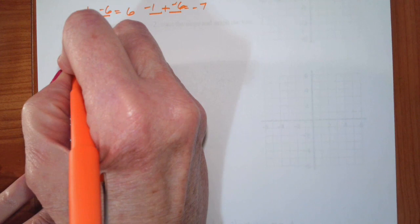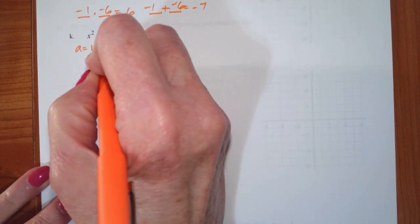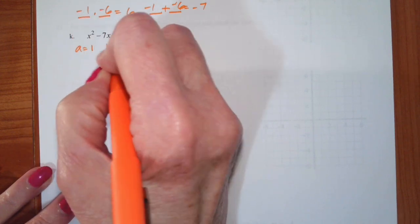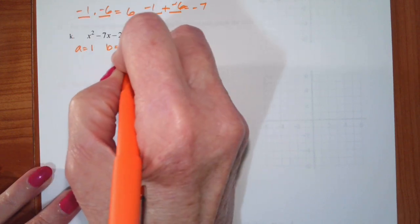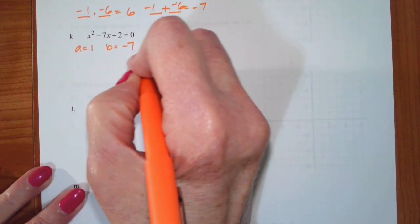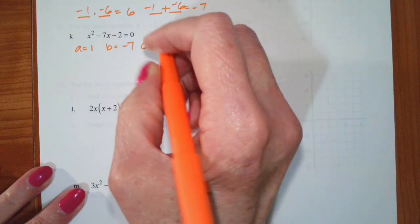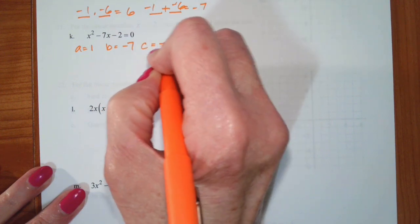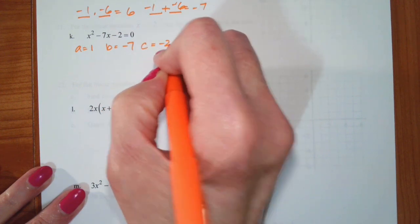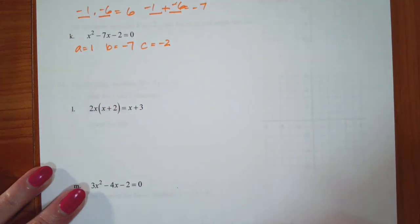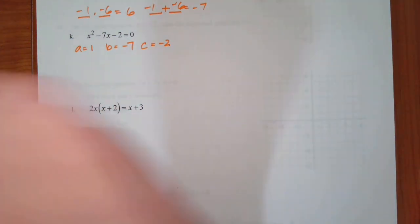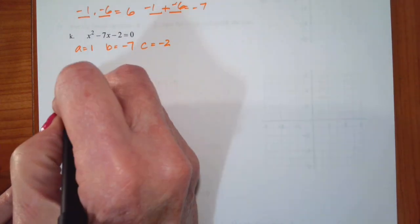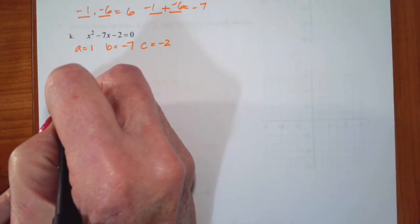So a is the coefficient of x squared, b is the coefficient of x, and c is the constant. Then you plug them into the formula, and you will be given the formula.